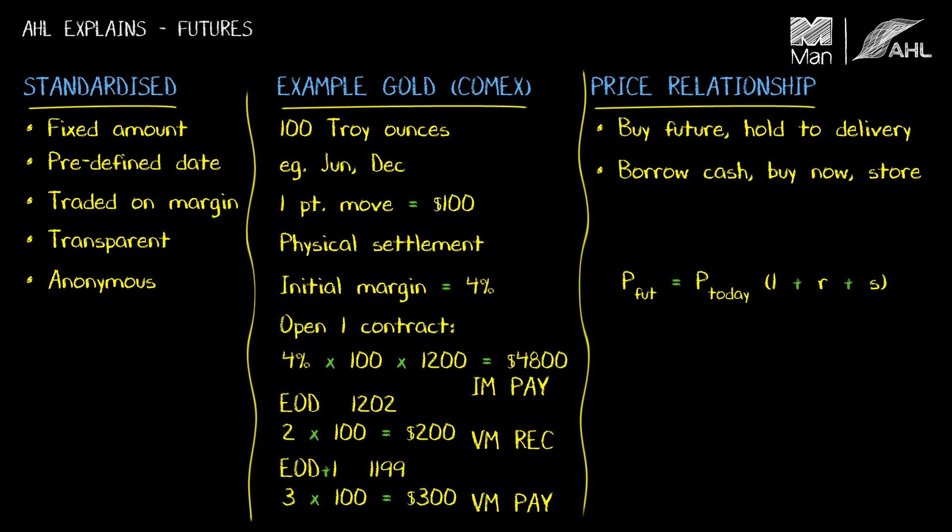This relationship only really holds for non-perishable items — if you have perishable items, it's more complicated. So that's all we're going to cover today about futures. They're very liquid, transparent, and available on many underlyings. The key point I really want to stress is they're very cash efficient because they're traded on margin, and this is important for targeting risk. We'll see this again in the next chapter where we look at portfolio diversification. Thanks very much.